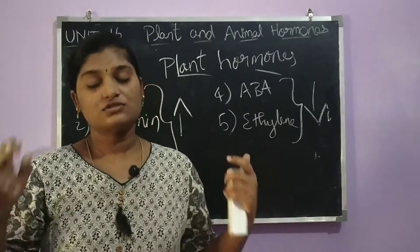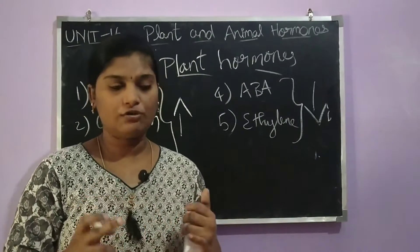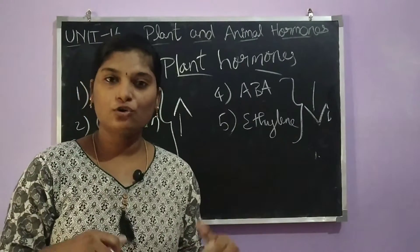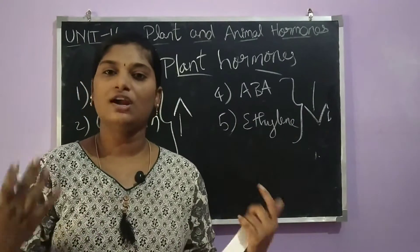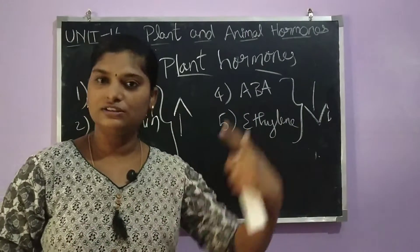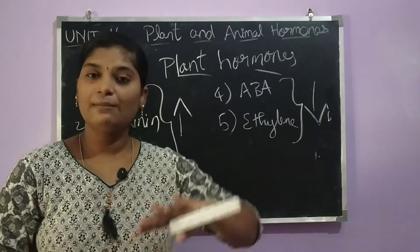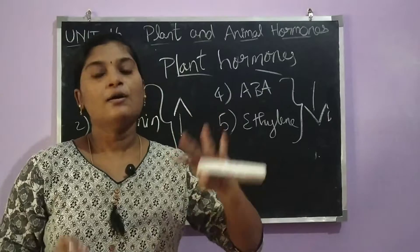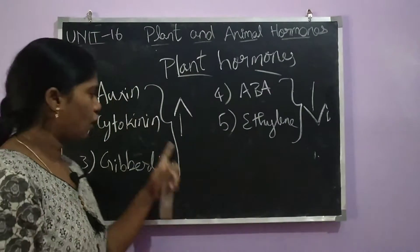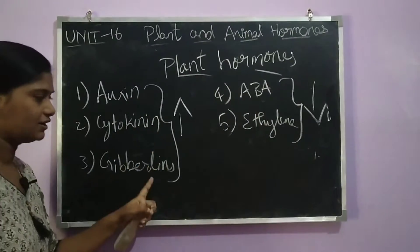Plant growth depends on favorable and unfavorable conditions. Favorable conditions include: first, climatic situation; water availability; and soil nutrients. These are all the favorable conditions. In this time the plant will grow. The growth-supporting hormones are auxin, cytokinin, and ethylene.